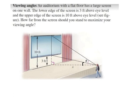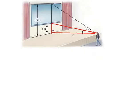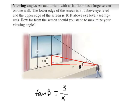We consider this triangle — I highlight it in red. We have tan(beta), where beta is the angle. That is about opposite over adjacent: we have number 3 divided by s.